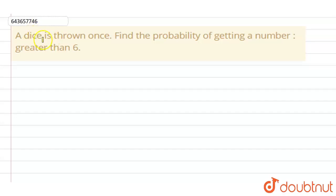Hello students, in this question we have given that a dice is thrown once and we need to find the probability of getting a number greater than 6.